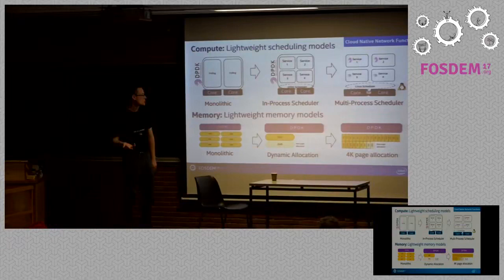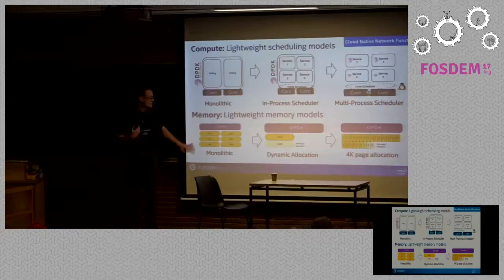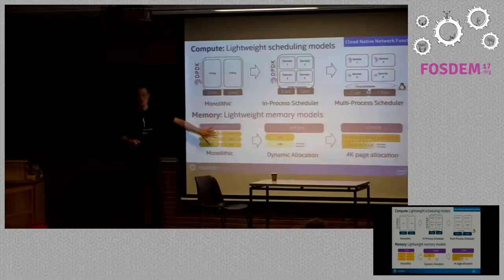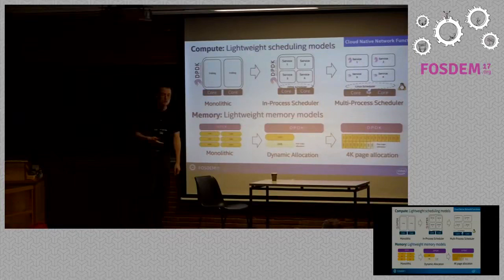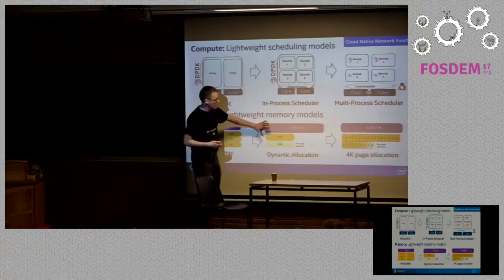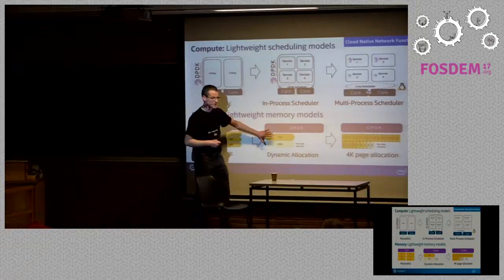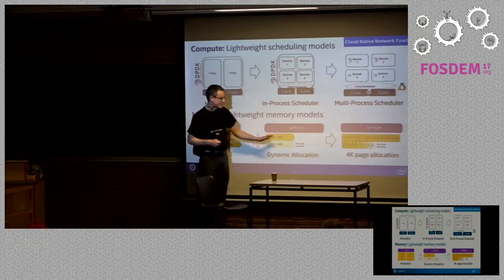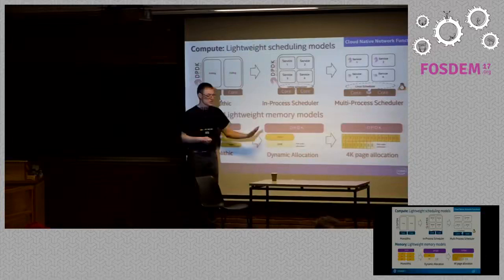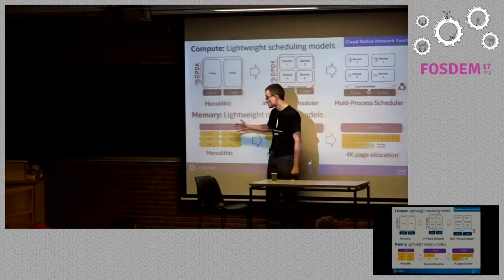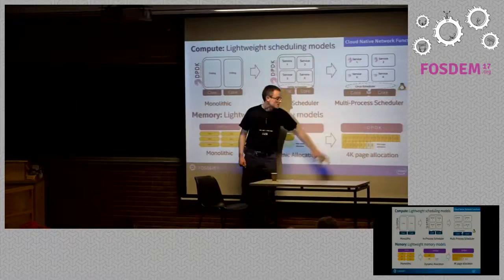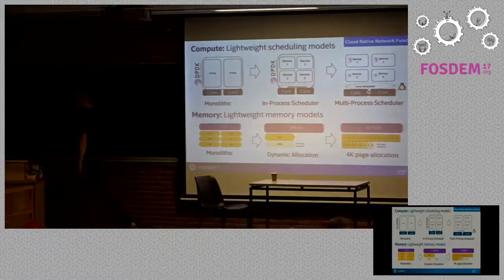There are times when you want multiple small processes that support migration, scale-out, and high availability like cloud applications, and other times when you want the highest performance. By maintaining the same scheduler API, it becomes a choice for the deployment engineer. We're also working in the 1805 DPDK release to make the memory model lighter — moving to huge pages on demand, so DPDK only allocates huge pages as they're used. This makes DPDK much better at sharing system memory. Certain use cases like containerized microservices may not need huge pages at all and will need 4K page support.